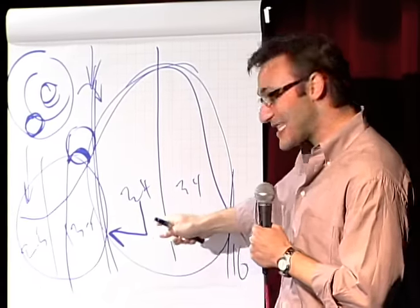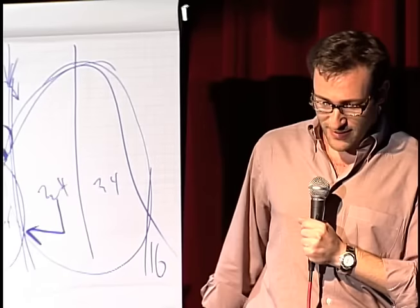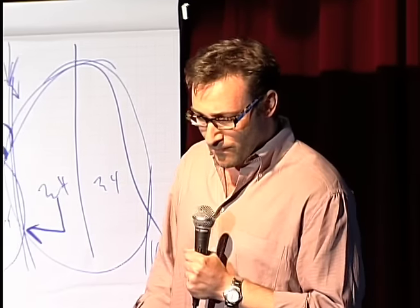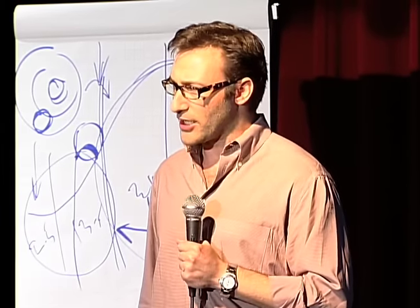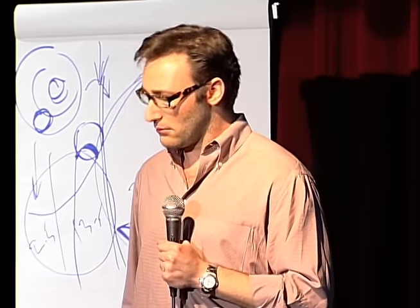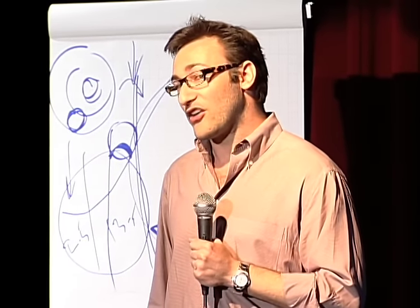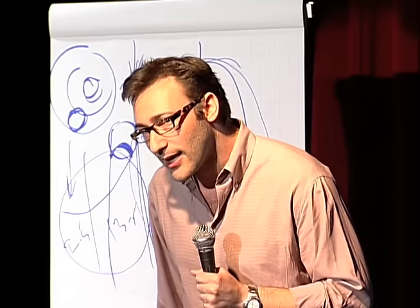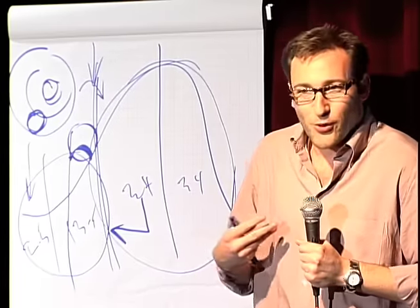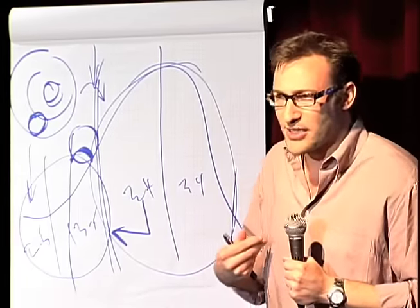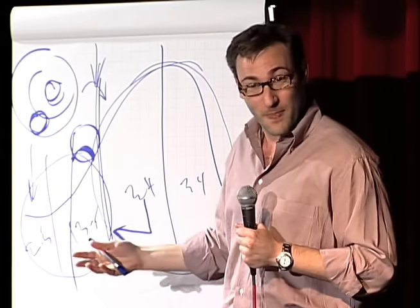Now let me give you a successful example of the law of diffusion of innovation. In the summer of 1963, 250,000 people showed up on the mall in Washington to hear Dr. King speak. They sent out no invitations, and there was no website to check the date. How do you do that? Well, Dr. King wasn't the only man in America who was a great orator. He wasn't the only man in America who suffered in a pre-civil rights America. In fact, some of his ideas were bad. But he had a gift.